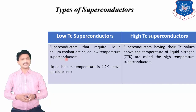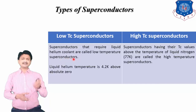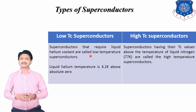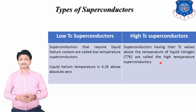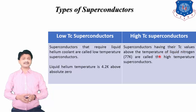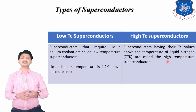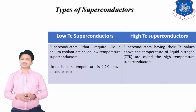Let's start with low temperature superconductors, where Tc stands for the critical temperature value. Superconductors that require liquid helium cooling are called low temperature superconductors. Liquid helium temperature is 4.2 K above absolute zero. High temperature superconductors have critical temperature values above the temperature of liquid nitrogen, which is around 77 K. This type is known as a high temperature superconductor.